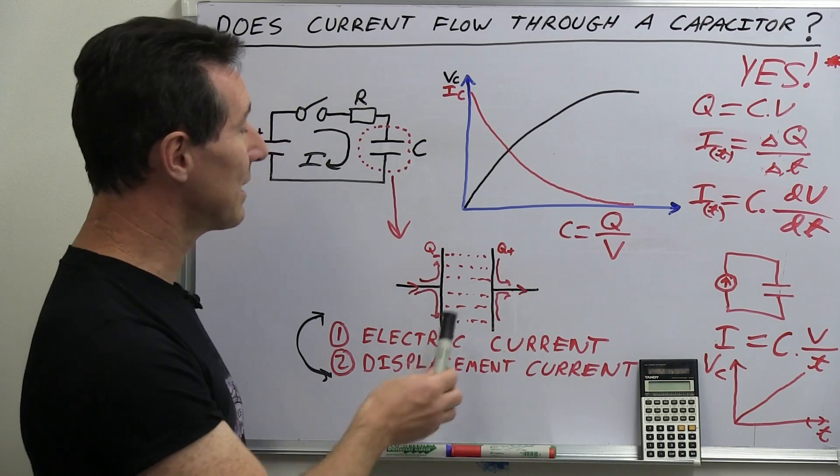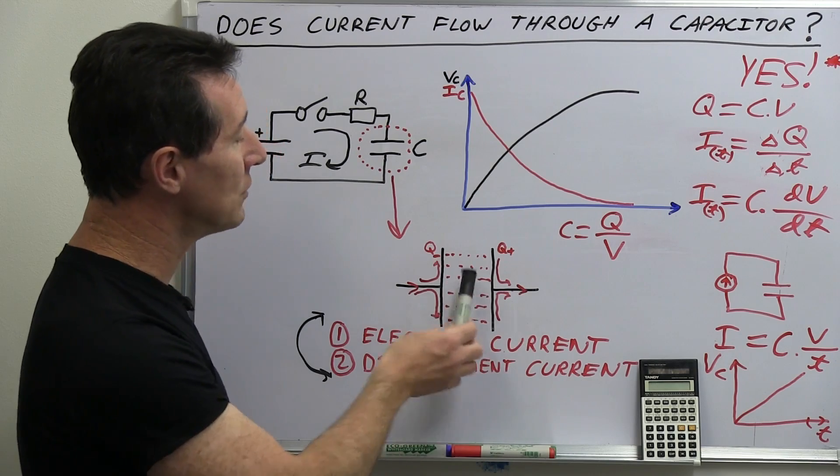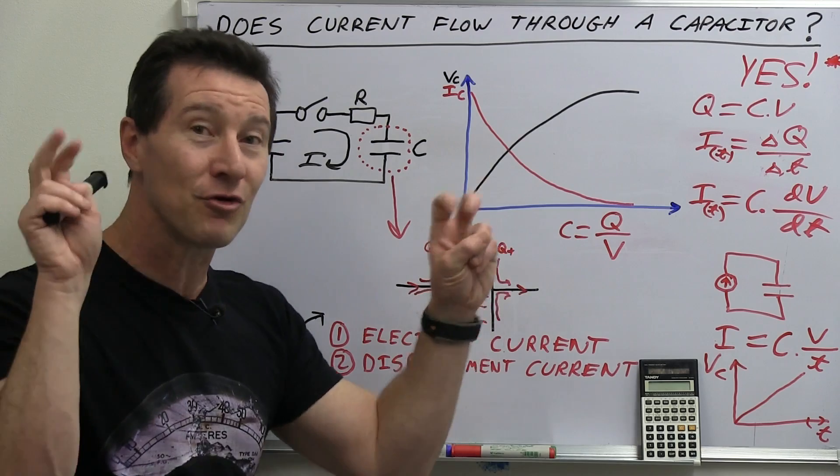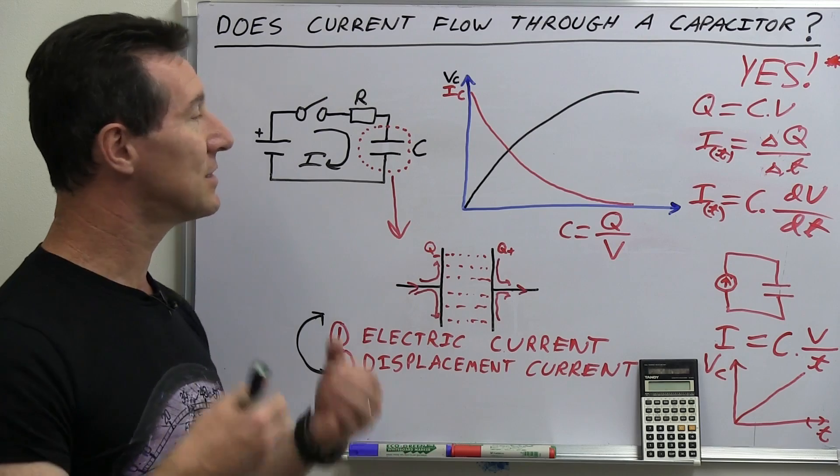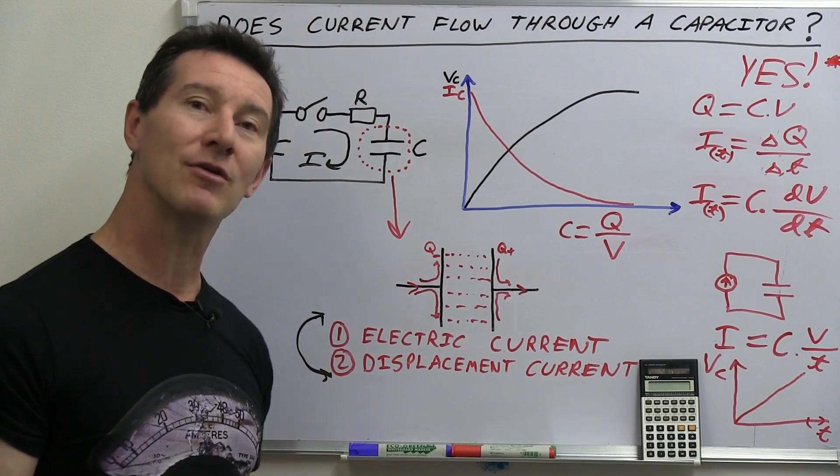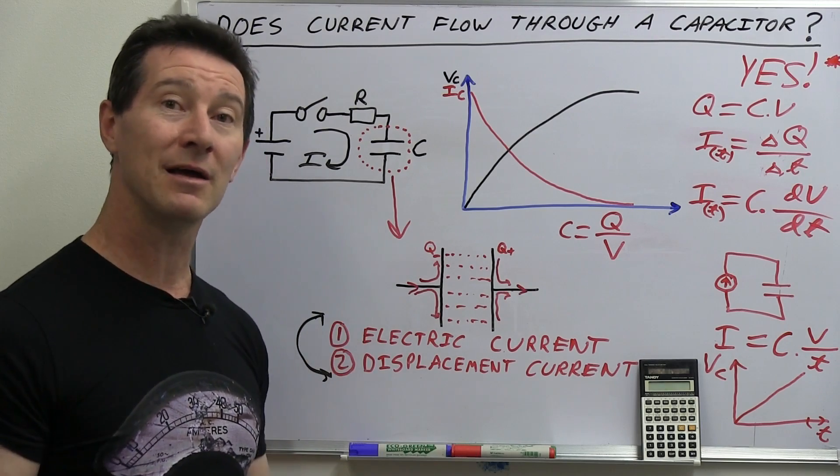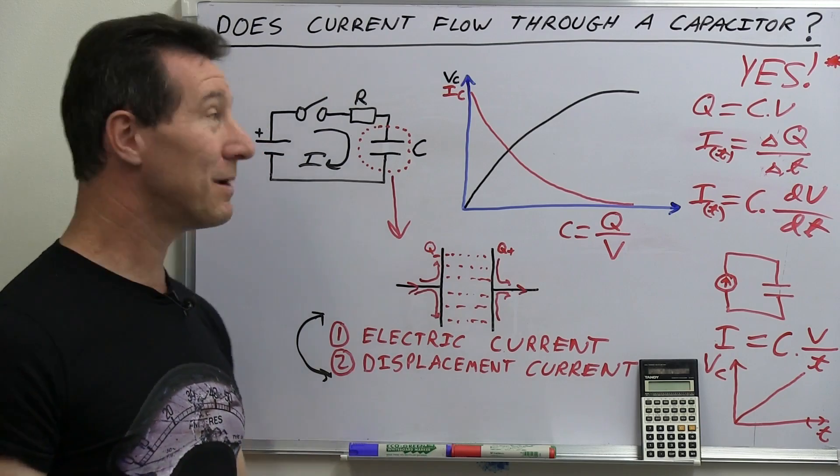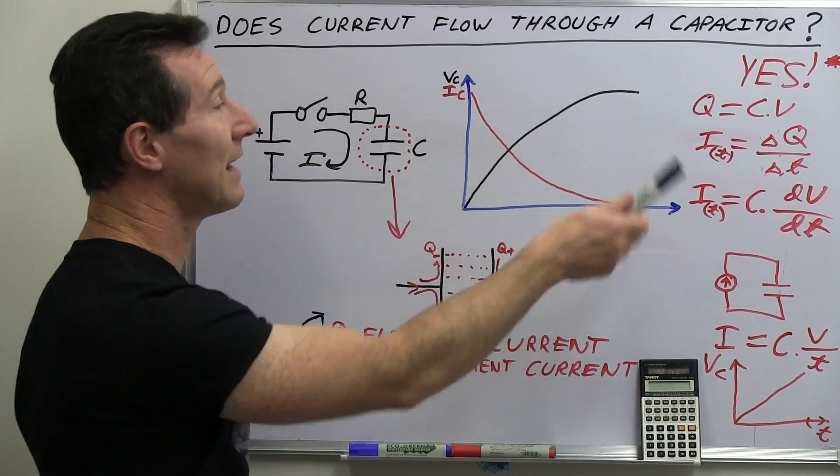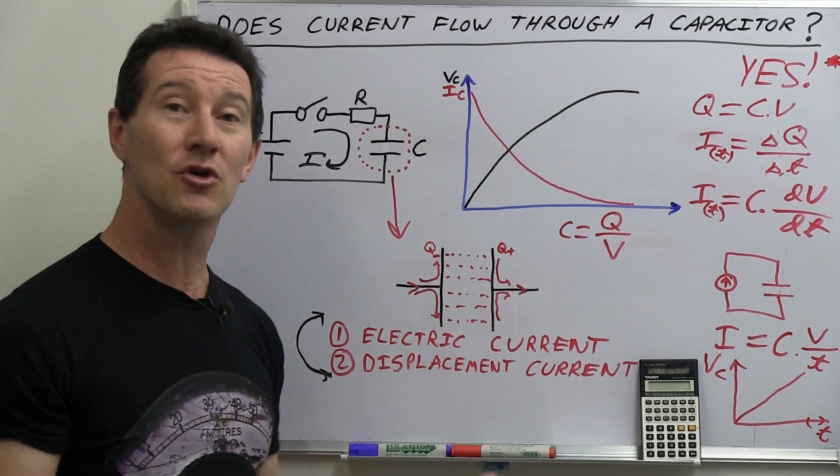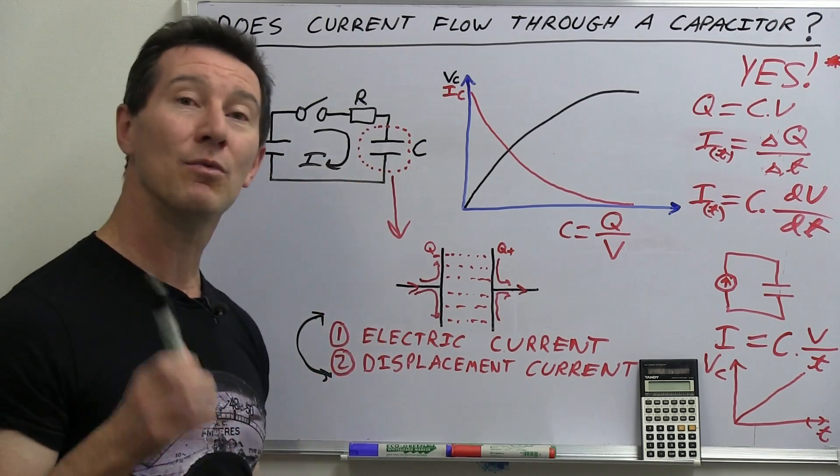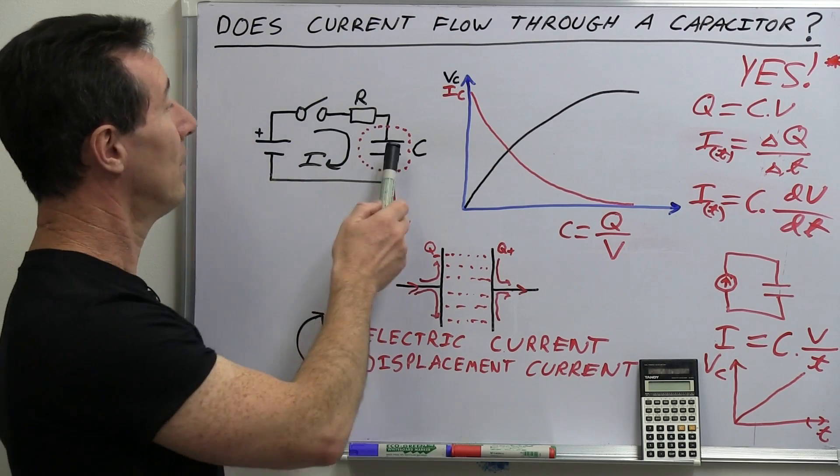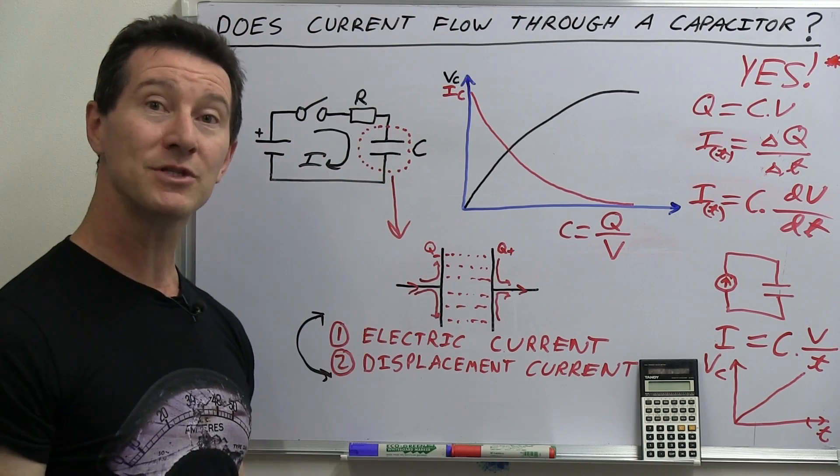And that displacement current is what actually flows through, or flows through, I use that in quote marks, flows through the capacitor. But that's why it's still valid to say that there's current flowing through the capacitor in the world of electronics. Because essentially there is, because our day-to-day equations all assume and know that there is current flowing in this series circuit with the capacitor there. Even though it's effectively an open circuit.